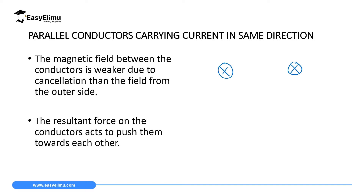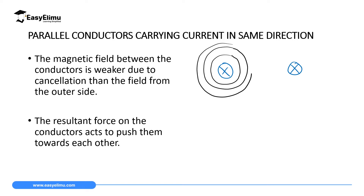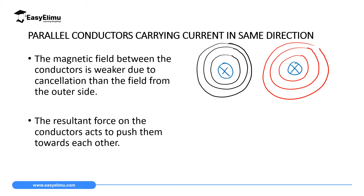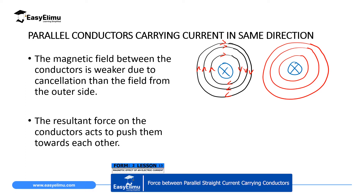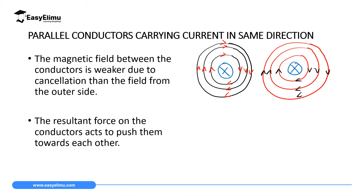Let's draw the two conductors and consider this scenario. If we have a magnetic field around the first conductor, then we have another magnetic field on the other conductor. If you determine the direction of this magnetic field, up here they'll be moving one way, and on the other side they'll be moving in the opposite direction. Then if you consider the other conductor, the fields between them are moving in opposite directions, so there will be a cancellation of the magnetic field between them.